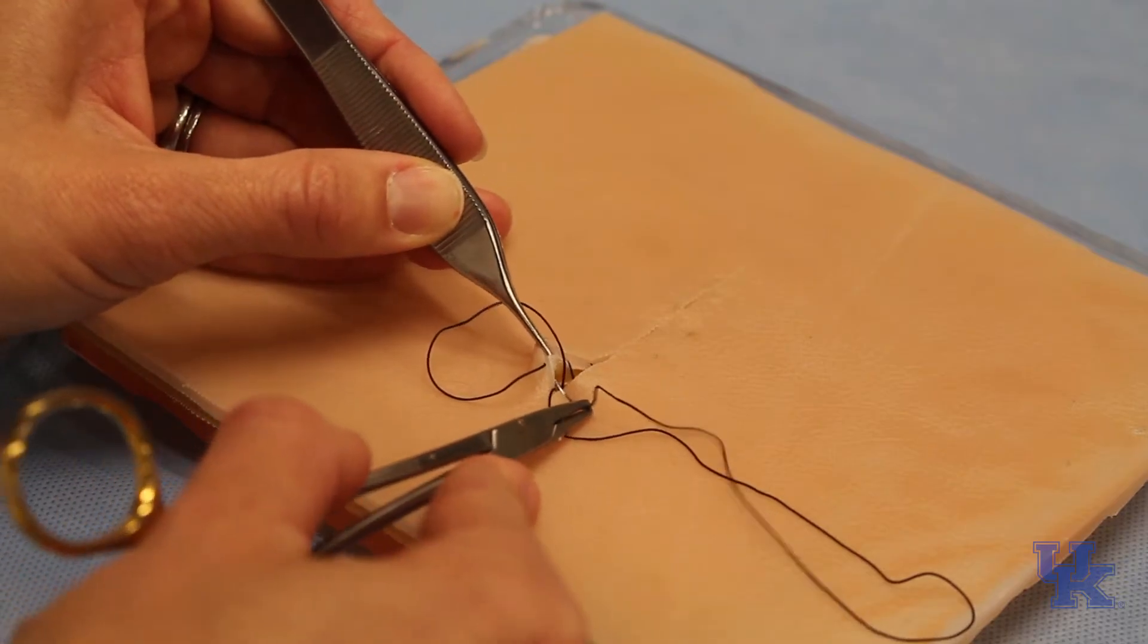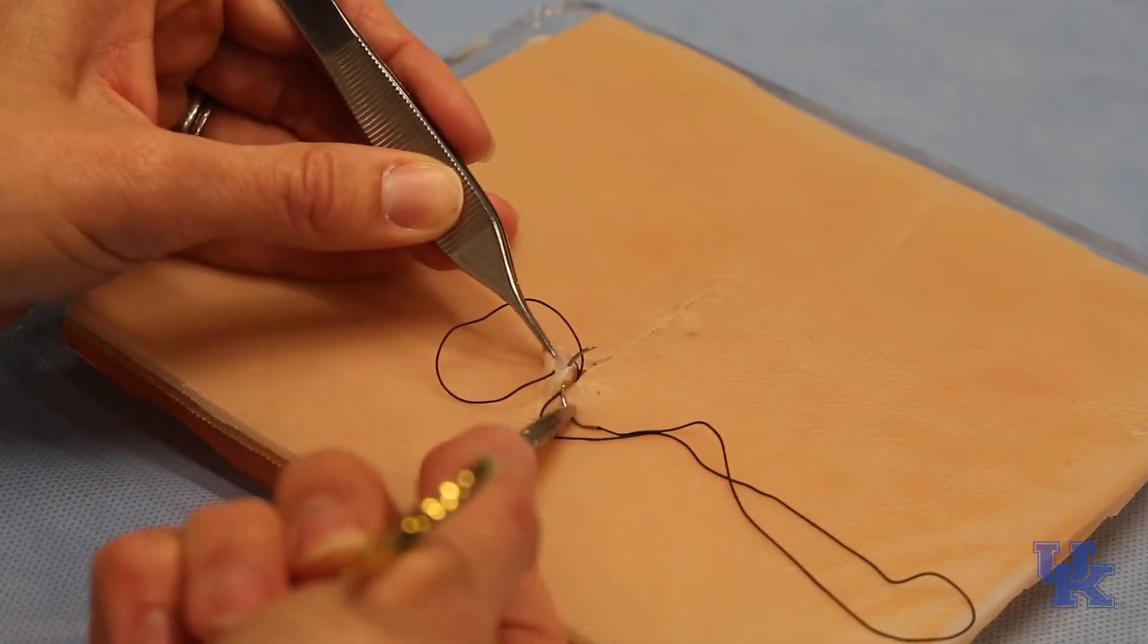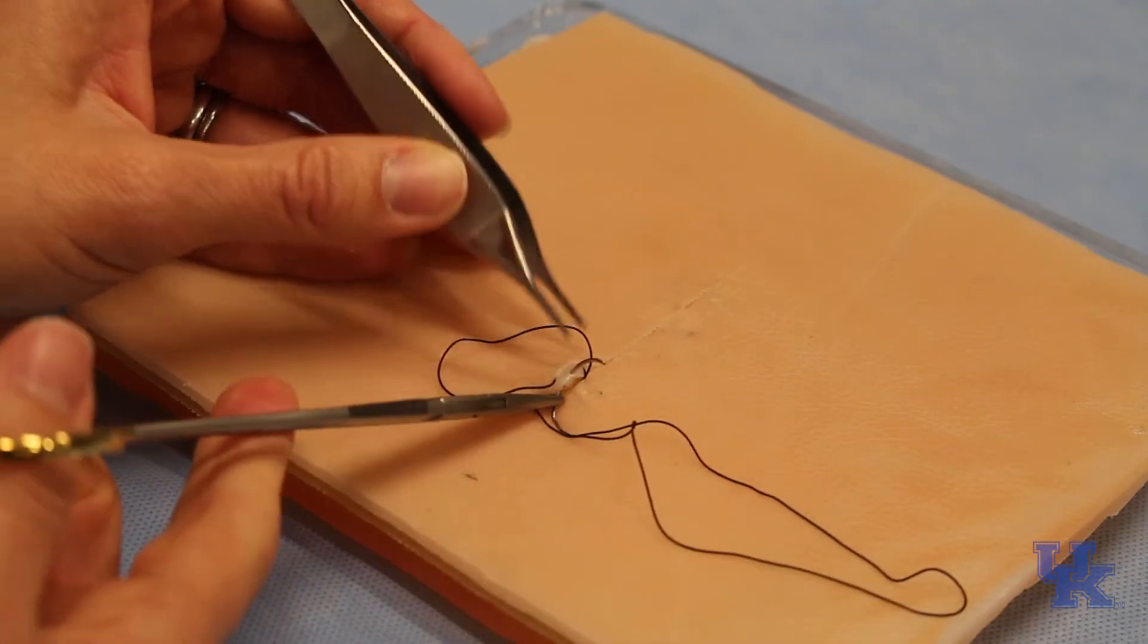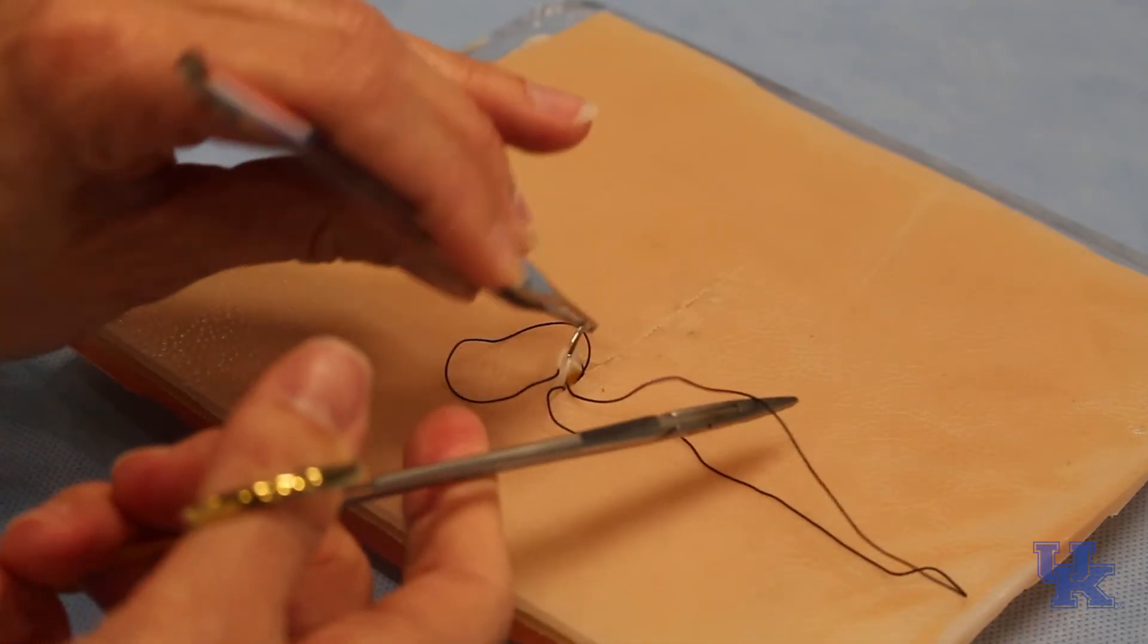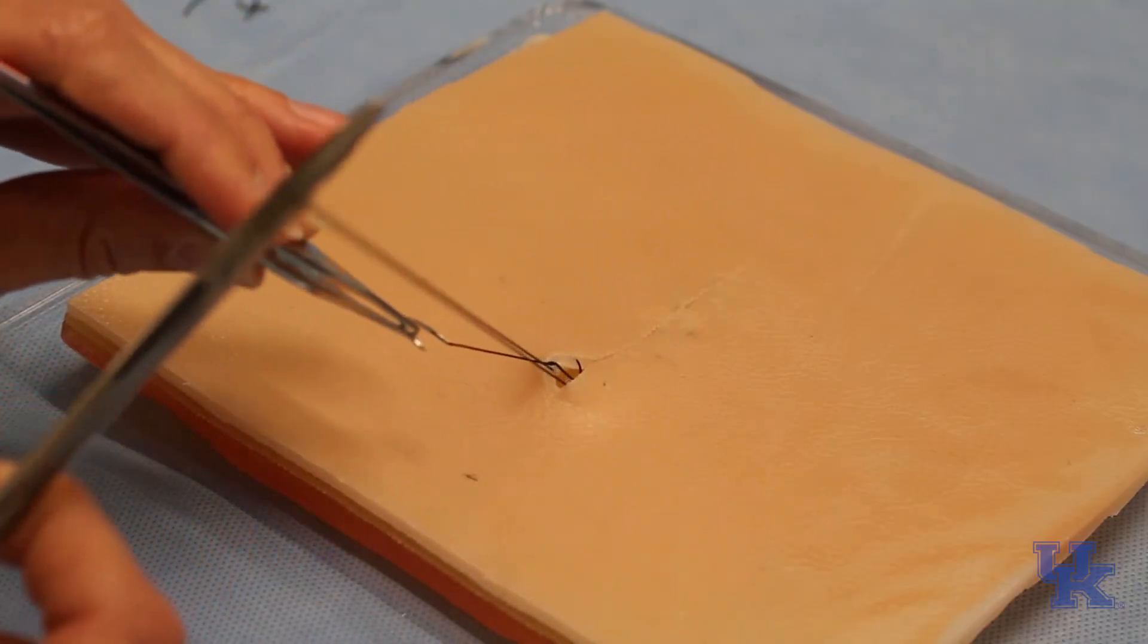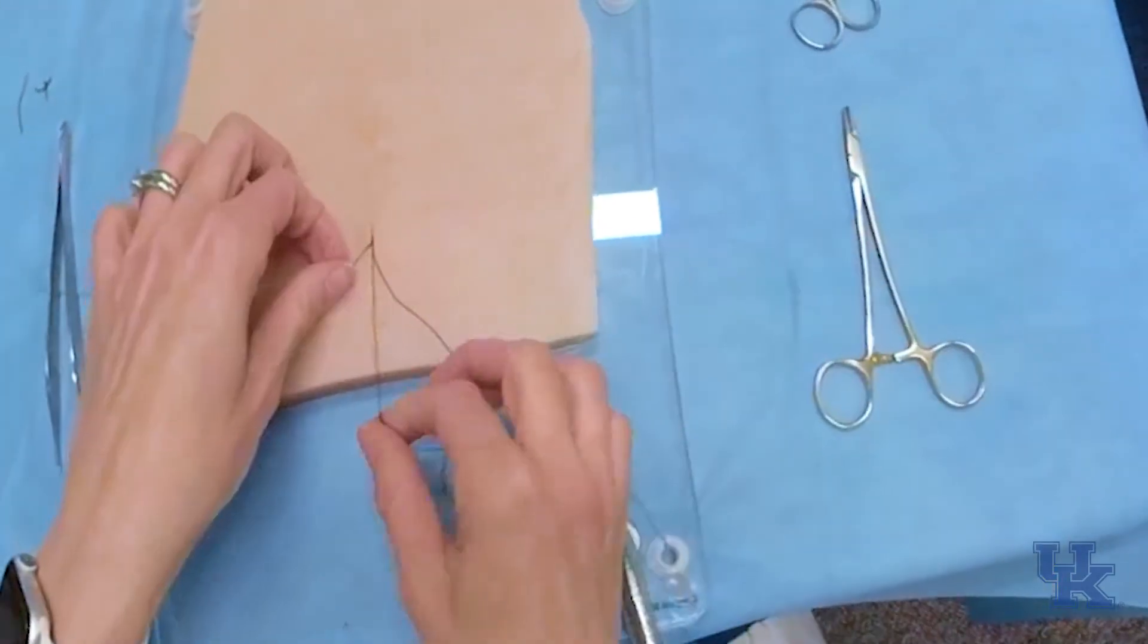So what I like to do is grab a whole bite that's just deep. You see that's all deep. It's all in the dermis. Nothing's right up at the skin edge, and I pull that through. Now all three of my sutures are coming from deep.